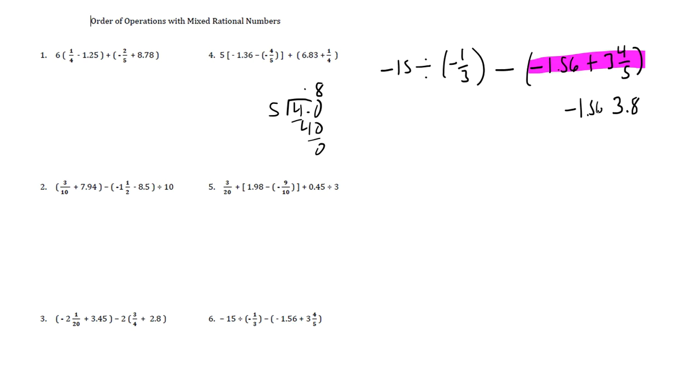And we have a negative 1.56. So when we combine these two, because the signs of the two numbers are not the same, we're going to subtract the two numbers. So 3.8 subtract 1.56. And in this case, our answer is going to end up being positive. It'll be a positive 2.24. That's what's inside our parentheses.